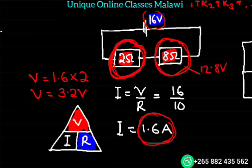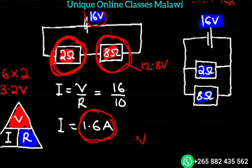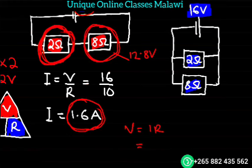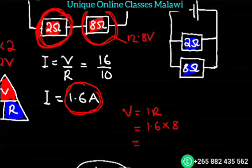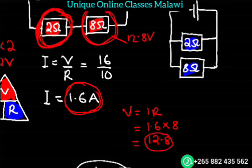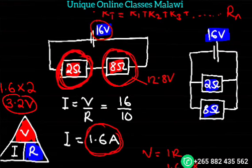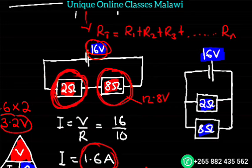Using V equals IR: I is the same throughout a series circuit. So V2 equals 1.6 times 8, giving us 12.8 volts. Checking: 3.2 plus 12.8 equals 16 volts, which equals the total voltage. So voltage in series is shared. Current in series is the same throughout. Resistance in series increases to give total resistance.